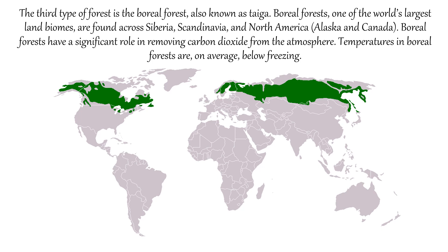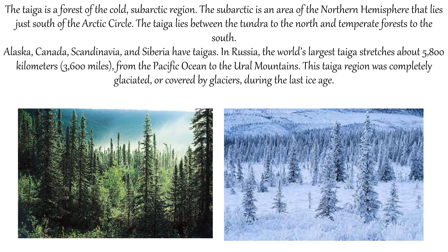The third type of forest is the boreal forest, also known as taiga. Boreal forests, one of the world's largest land biomes, are found across Siberia, Scandinavia and North America in Alaska and Canada. The boreal forests have a significant role in removing carbon dioxide from the atmosphere. Temperatures in the boreal forest are on average below freezing point. The taiga is a forest of the cold sub-arctic region. The sub-arctic is an area of the northern hemisphere that lies just south of the Arctic Circle.